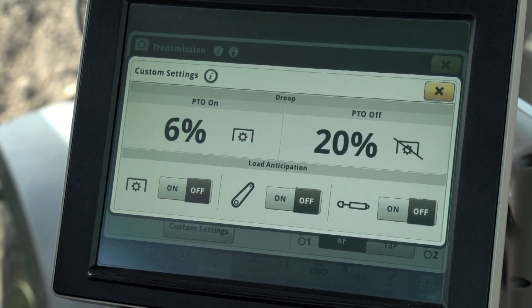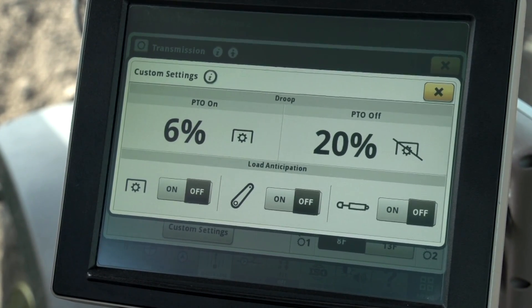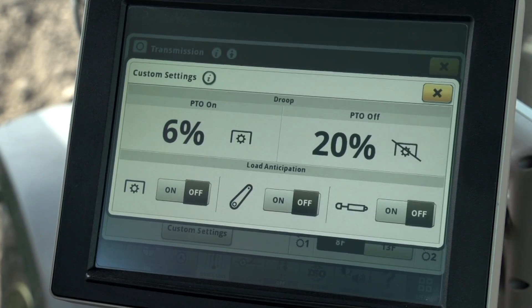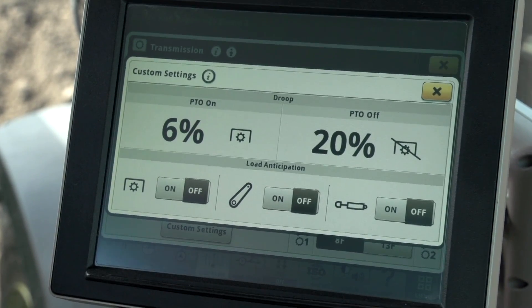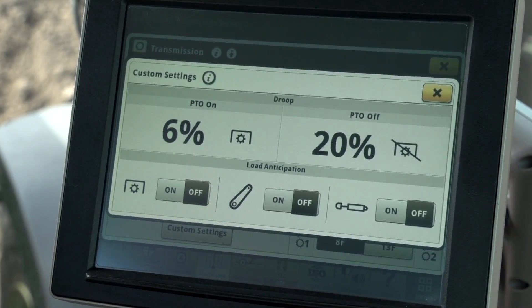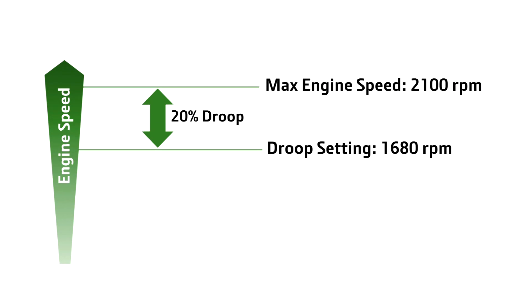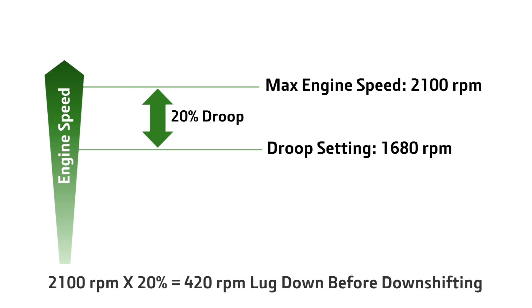The reason why is because the droop setting is based on the maximum allowed engine speed. For example, I have a PTO off droop setting of 20%. When field cruise is turned off, the droop setting is 20% of 2100 RPM, or about 420 RPM. This means under full load the tractor will lug down about 420 RPM before it begins to downshift.